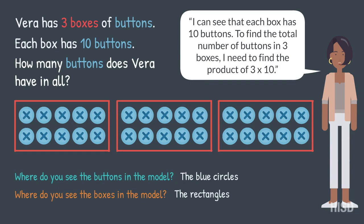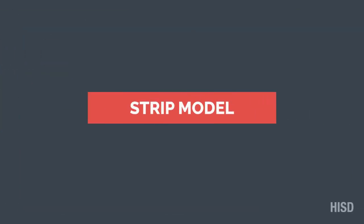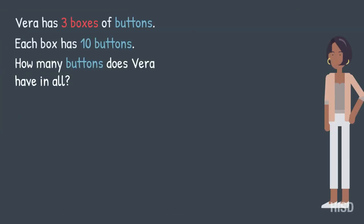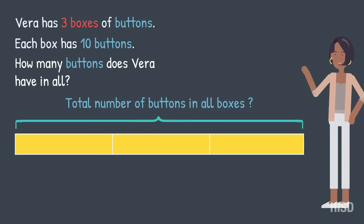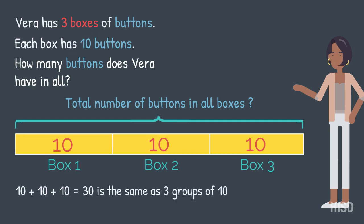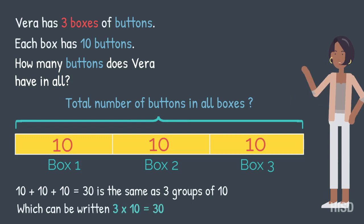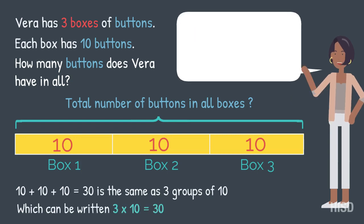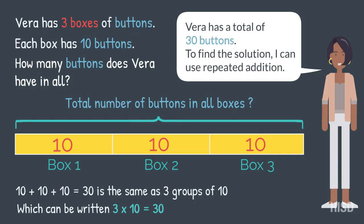Now let's try this with a strip diagram. What's the total number of buttons in all boxes? Ten plus ten plus ten equals thirty. Is the same as three groups of ten, which can be written as three times ten equals thirty. Vera has a total of thirty buttons. To find the solution, I can use repeated addition.